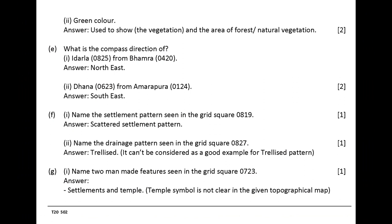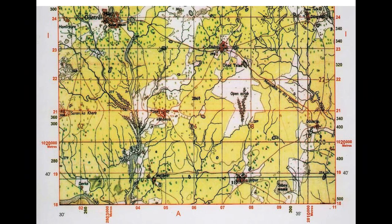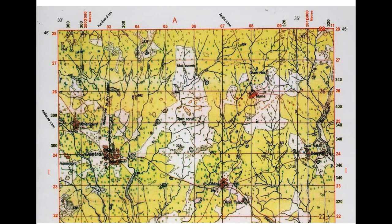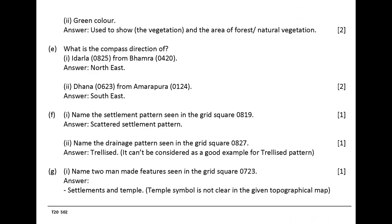Name the settlement pattern seen in the grid square 0819. Answer: scattered settlement pattern. Name the drainage pattern seen in the grid square 0827. Answer: trellised.